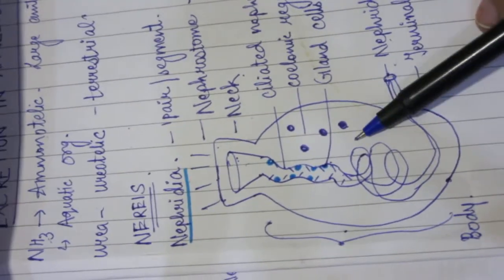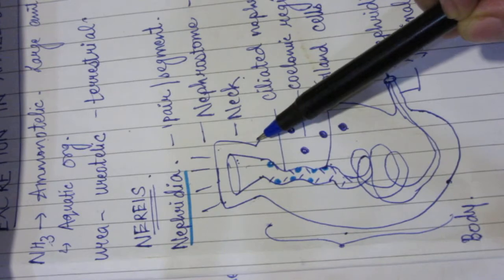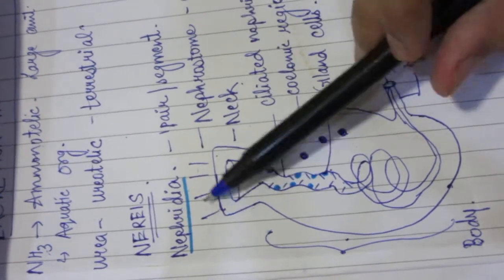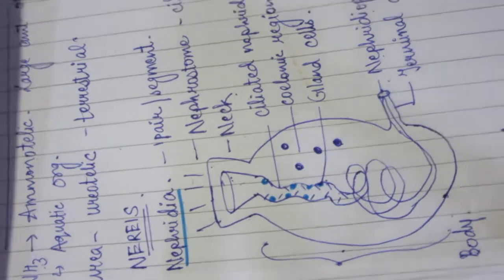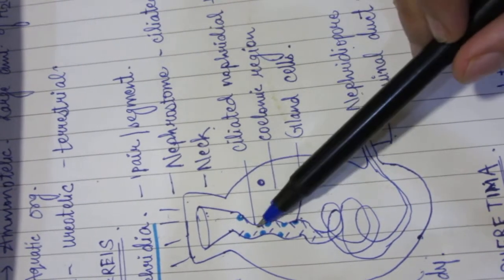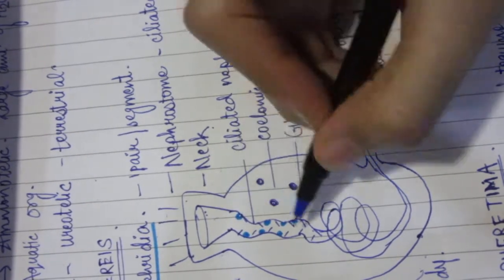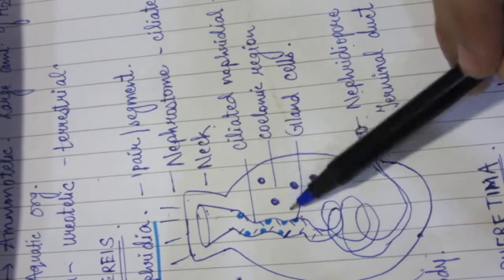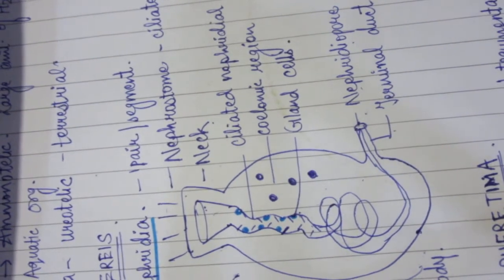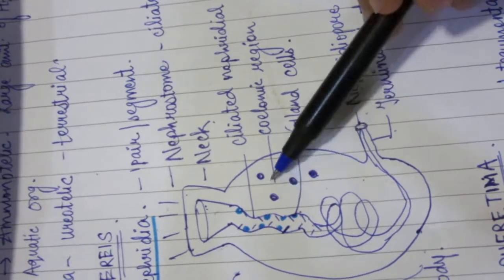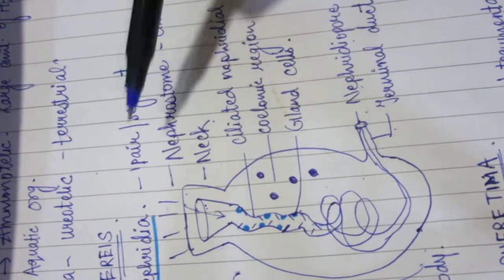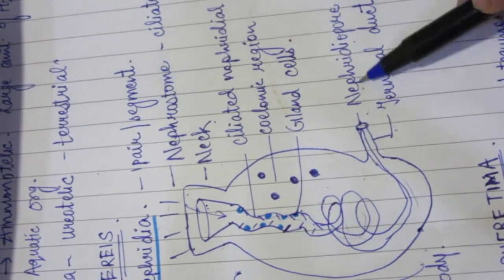This is a nephridium. The neck region has cilia, and this region we call the nephrostome, which is a ciliated funnel-like structure. Then there is the body, and it ends in the terminal duct. This is the nephridial tubule. You can see the cilia and gland cells. There is also the coelomic region. So there are two types of excretion pathways.